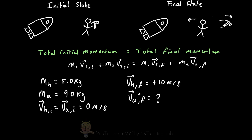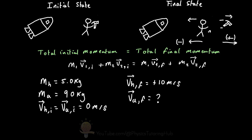We need to remember that velocity is a vector, which means that it has both magnitude and direction. Let's say that the direction the hammer is thrown is the positive direction, and anything moving in the opposite direction has a negative velocity. So the hammer moving at 10 meters per second in this direction has a positive value, and you as the astronaut are going to have a negative velocity.